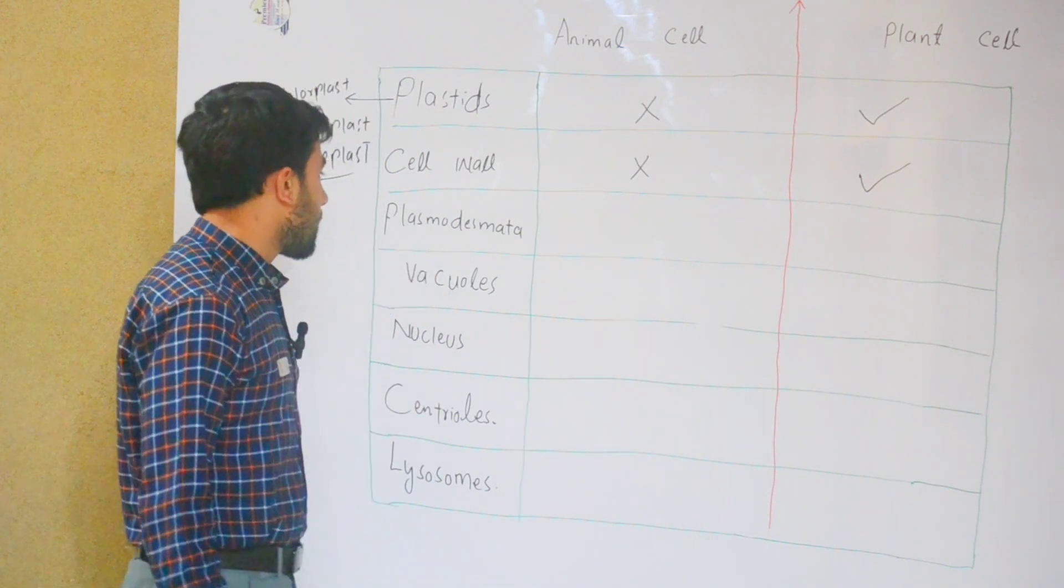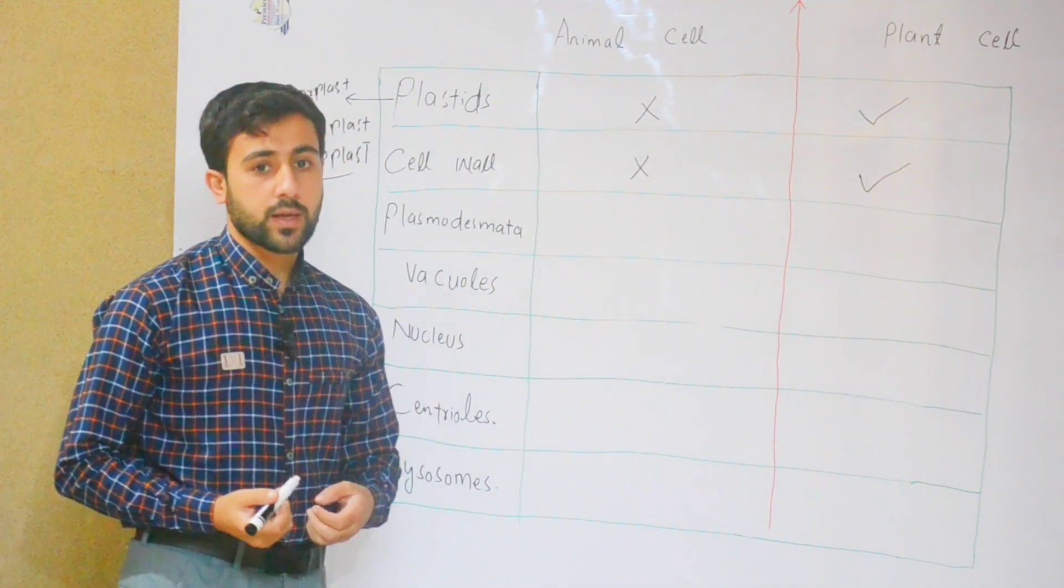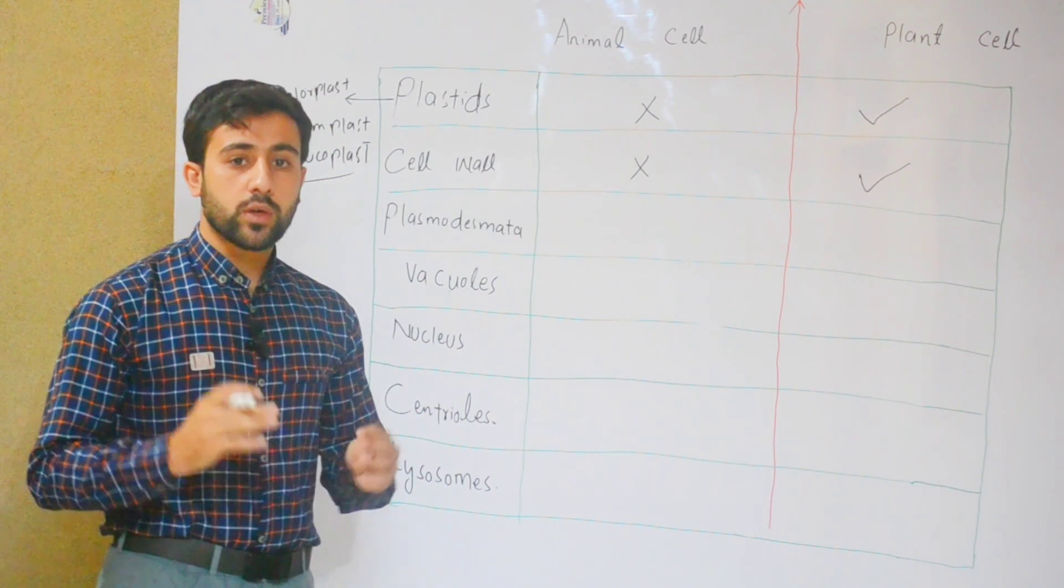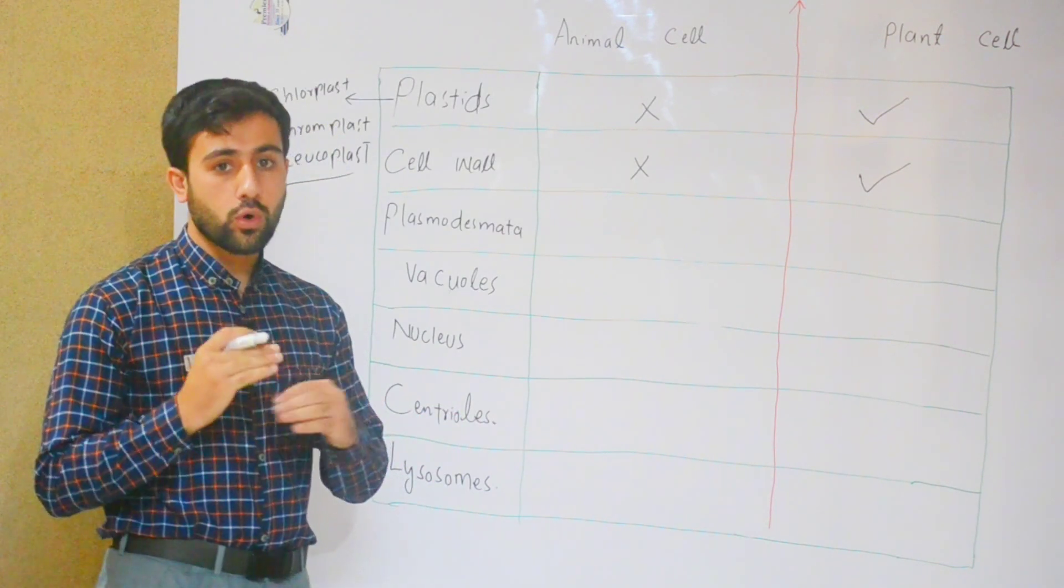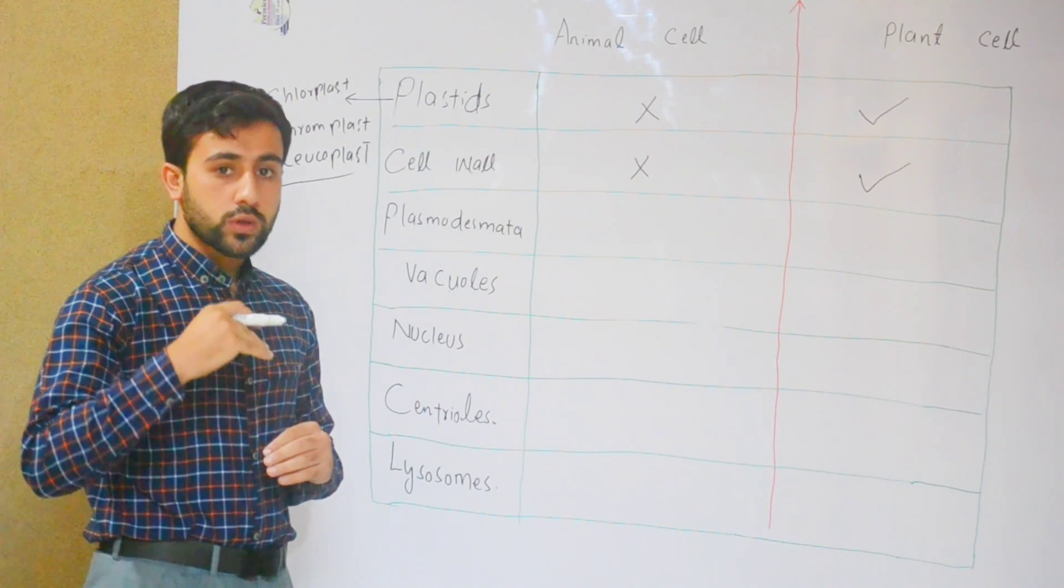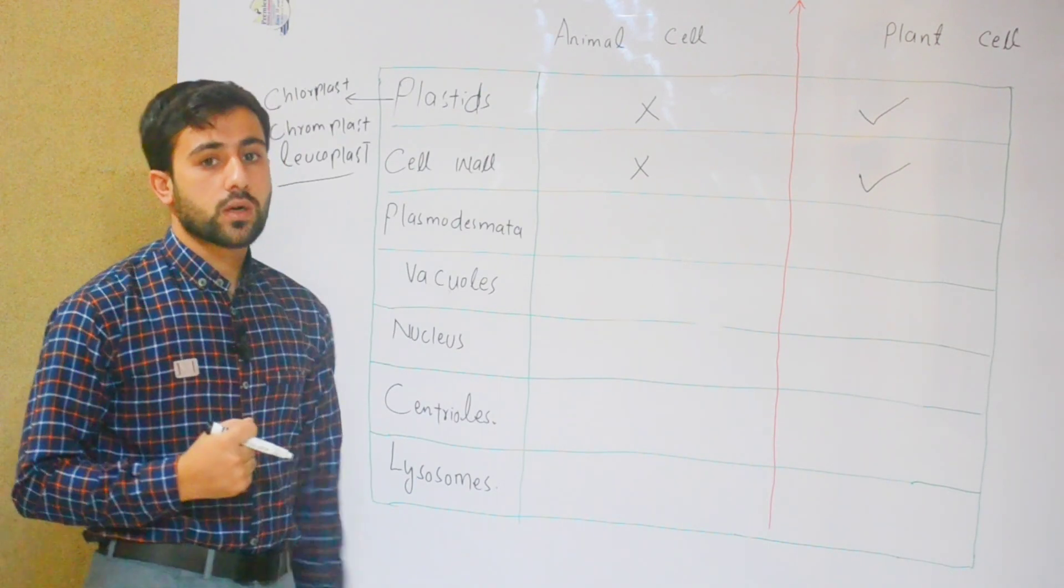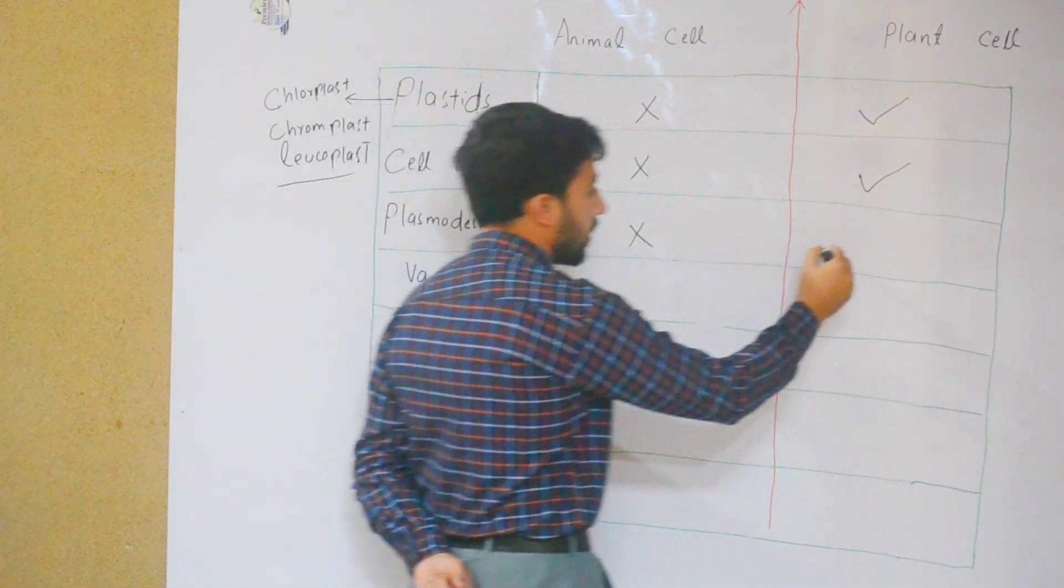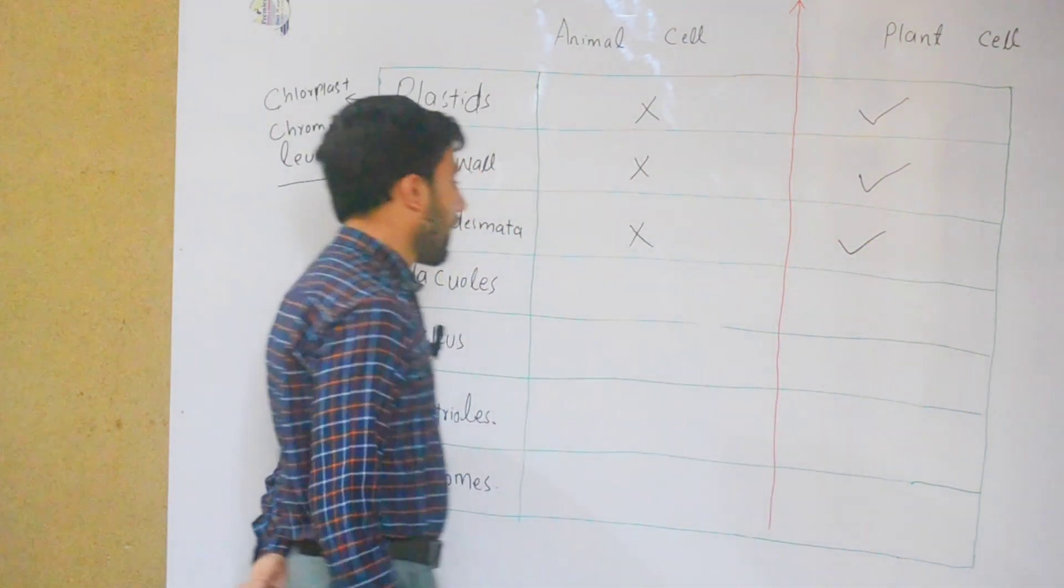The next difference is plasmodesmata. If you see in the plant, there are holes. The holes are involved in the plant cell and animal cell in different ways.